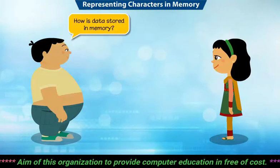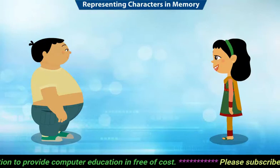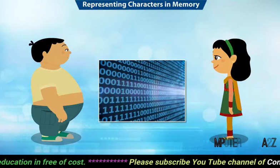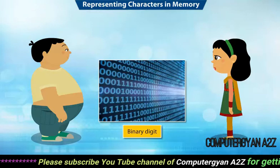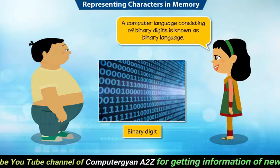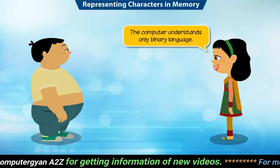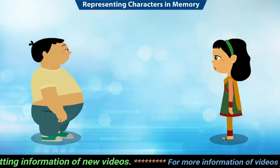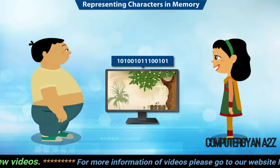How is data stored in memory? That's a good question. The computer stores data in the form of zeros and ones. These zeros and ones are called binary digits, or bits. A computer language consisting of binary digits is known as binary language. The computer understands only binary language. So when we copy our photos to the computer, the computer converts our photos into zeros and ones and stores it in its memory.